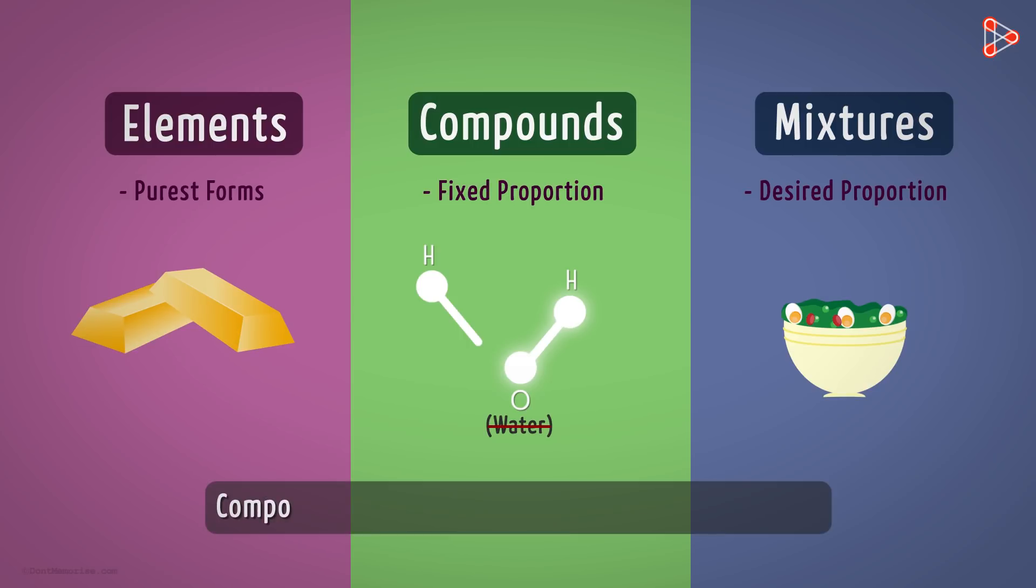So can we say that compounds and mixtures are made up of elements? Absolutely! So in nature, it implies that elements are the basic forms of every material that we find around. And hence in order to study every substance around us, we need to begin with studying the various elements.